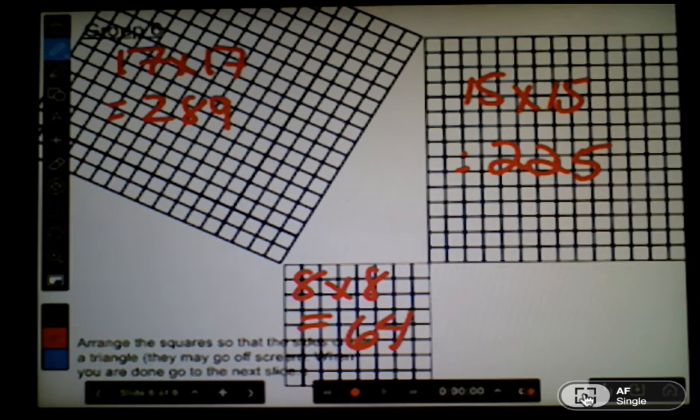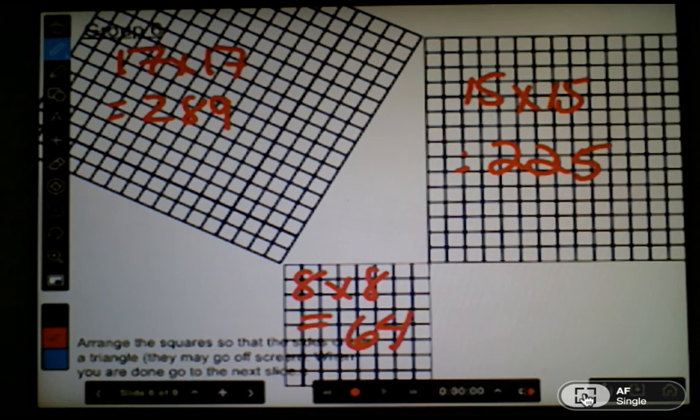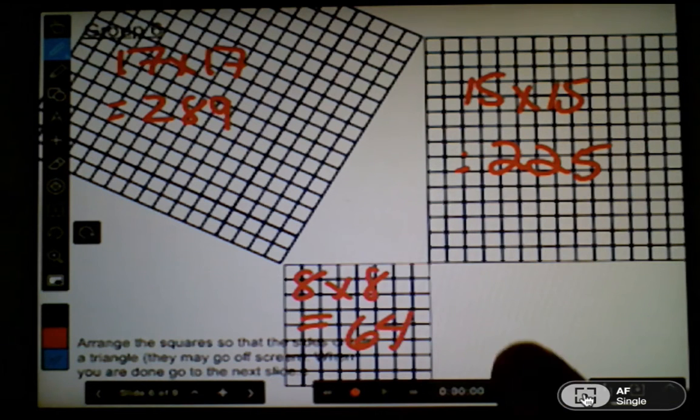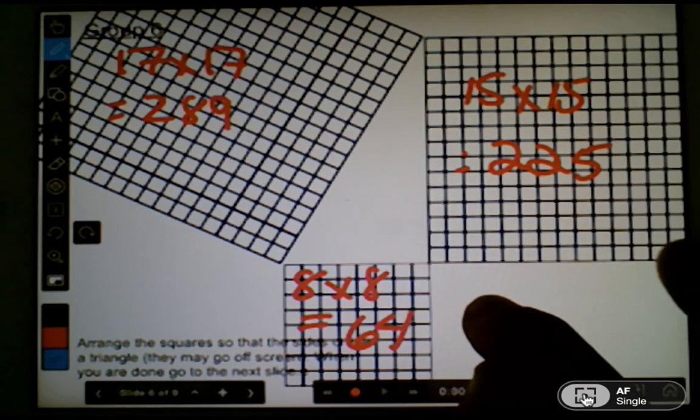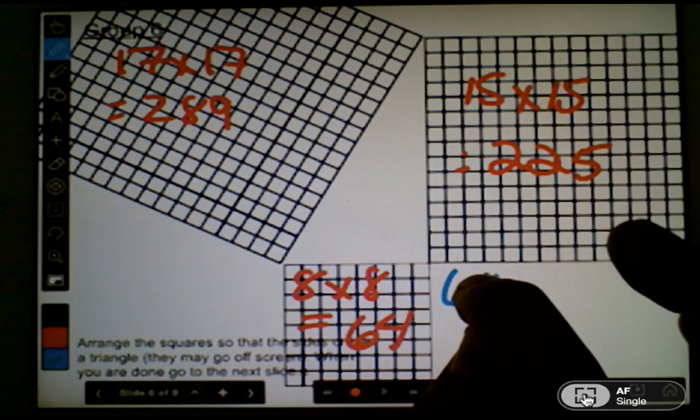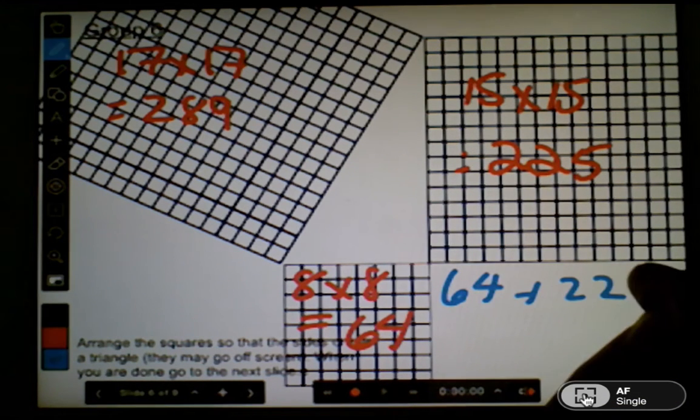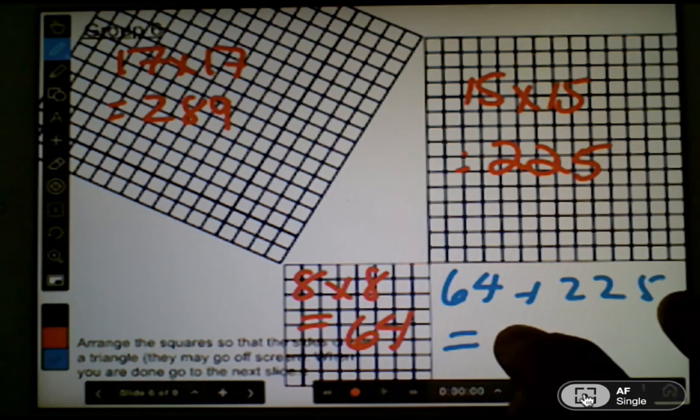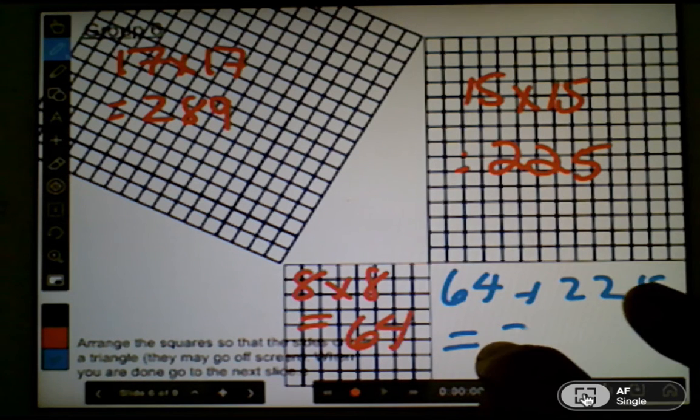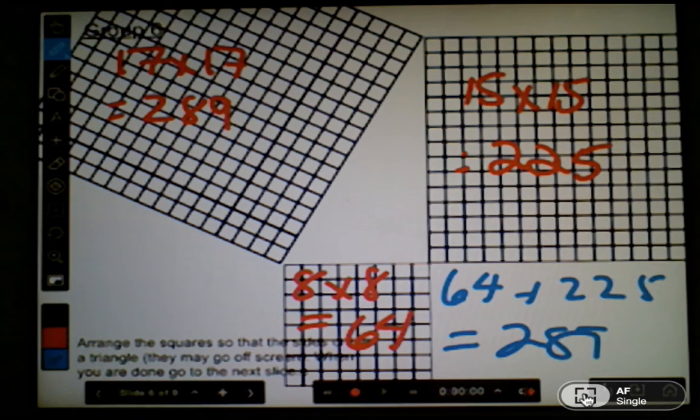Then the hope is that you ask students to see if there's any connections between the areas in the last three sets and the first three sets. Hopefully what you've let kids discover is that the area of the smaller squares—in this case 64 plus 225—equals the area of the largest square, 289, in the last three sets.